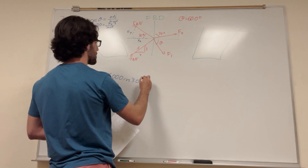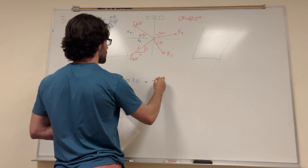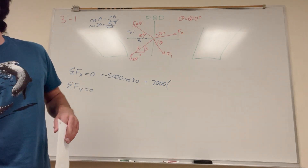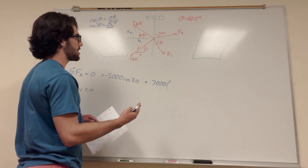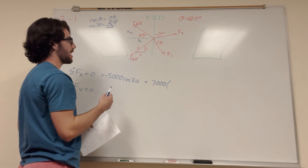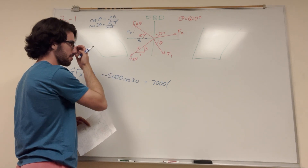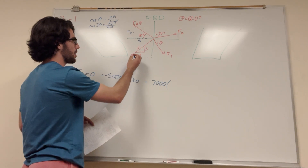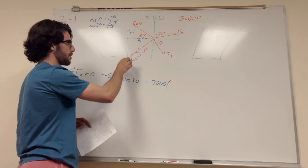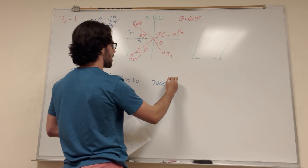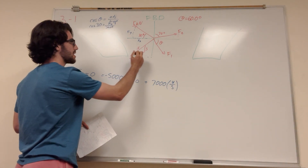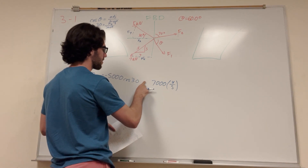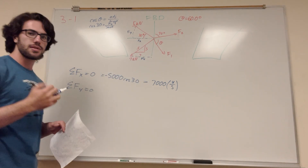Next is the 7 kN force. Instead of using sines and cosines, we can use the ratio from the triangle shown — it's a 3-4-5 triangle. We're trying to find x over the hypotenuse. The hypotenuse is 5 and the x component is 4, so for the 7,000 N force we multiply 7,000 by 4 over 5. That gives us the force in the x direction. This is also negative because it's pushing in the negative x direction.